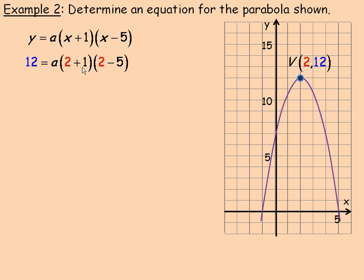Now, this is 3, and this is negative 3. So 3 times negative 3 is negative 9. And so the equation now becomes 12 equals negative 9 times a, or negative 9a.